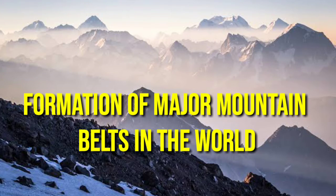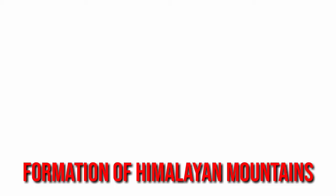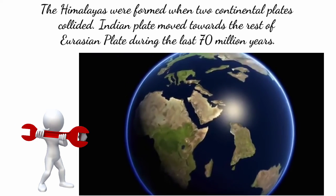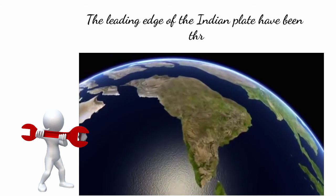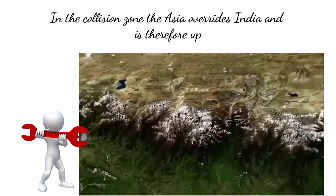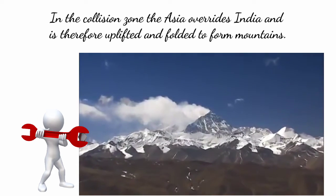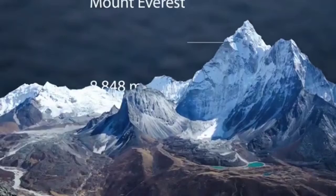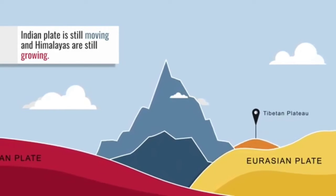Let's start with the formation of the Himalayan mountains. The Himalayas were formed when two continental plates collided — the Indian Plate moved towards the Eurasian Plate over the last 17 million years. The leading edge of the Indian Plate was thrust beneath the edge of the Asian continent, and in the collision zone, Asia overrides India and is therefore uplifted and folded to form mountains. Mount Everest of the Himalayan mountain range is the tallest mountain in the world at a height of 8,848 meters. Up to this day, the Indian Plate is still moving and the Himalayas are still growing.